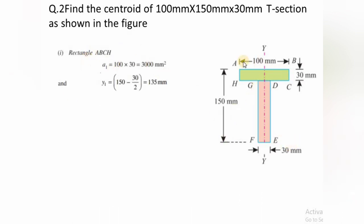We consider Rectangle 1 (the flange, ABCH): A1 = 100 × 30 = 3000 mm². The centroidal distance y1 from the base is 150 − 30/2 = 135 mm. For Rectangle 2 (the web, DEFG): the depth is 150 − 30 = 120 mm and breadth is 30 mm, so A2 = 120 × 30 = 3600 mm². The centroidal distance y2 from the base is 120/2 = 60 mm.